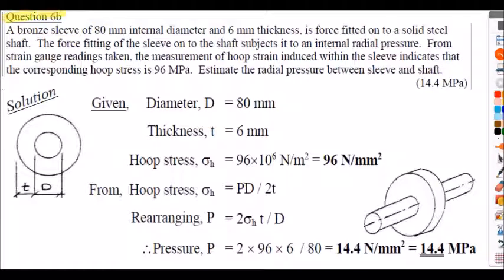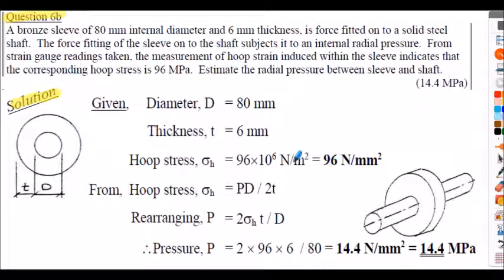Question 6b solution: a straightforward calculation despite the confusing context. Working in millimetres, 96 MPa = 96 N/mm². Rearrange the hoop stress formula for p to find the radial pressure.